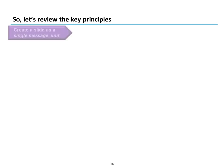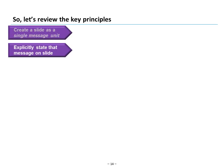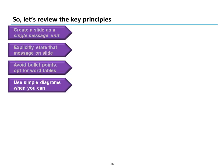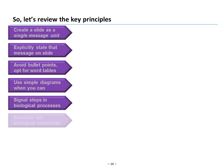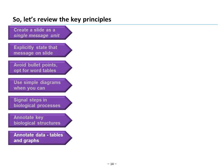Let's review the key principles: create a slide as a single message unit, completely integrated; explicitly state that message on the slide; avoid bullet points and opt for word tables; use simple diagrams when you can, especially to introduce key concepts; signal your steps in biological processes with arrows, numbers, or letters, or combine them; annotate your key biological structures so people know exactly what they're looking at; annotate your data tables and graphs to show people how to read them; and finally, use builds to reveal your content methodically. When you follow these principles, your slides will serve your talk well and allow the story of your science to come through.